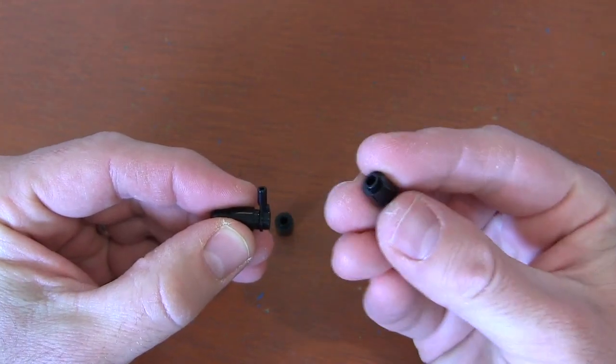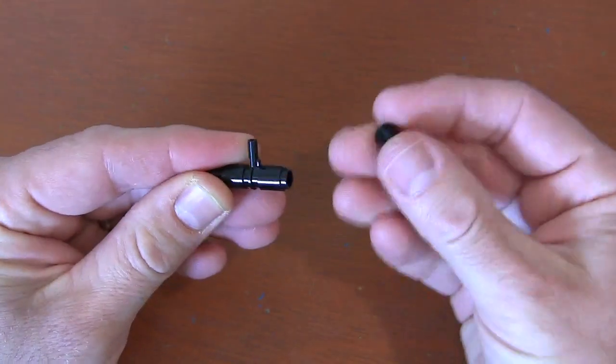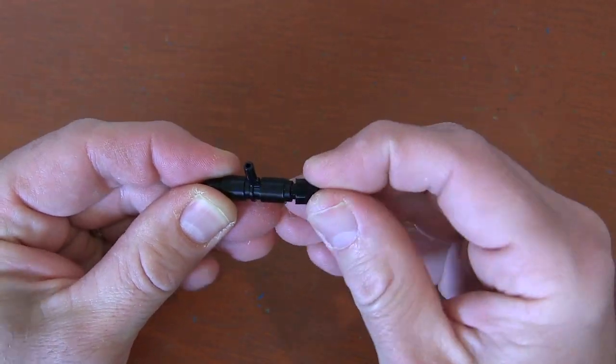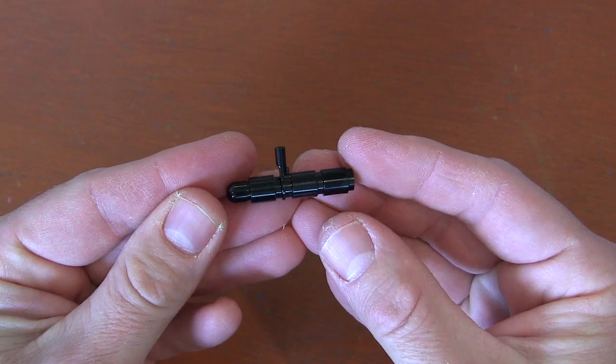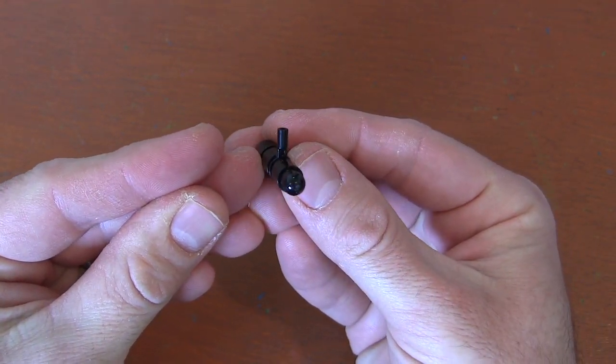And then behind that, we're just going to get two more of these one-by-one round bricks. Now, they don't need the hole in them, but that's the ones I have. So we're using three of those one-by-one round bricks total. And here we've got a nice little military submarine to patrol the ocean depths.